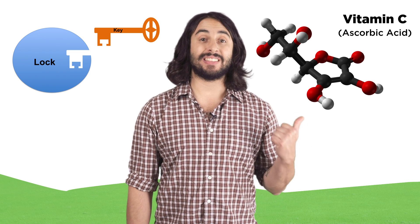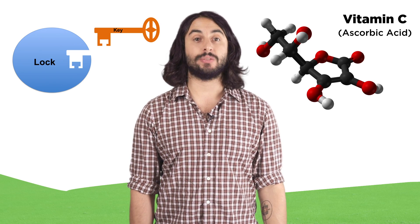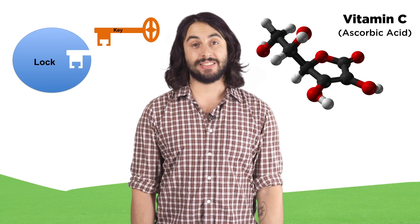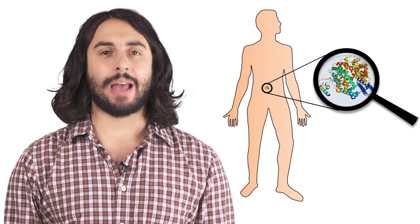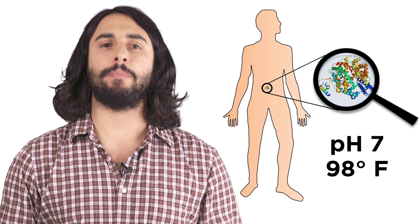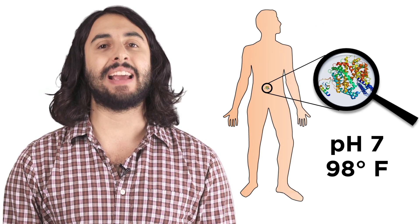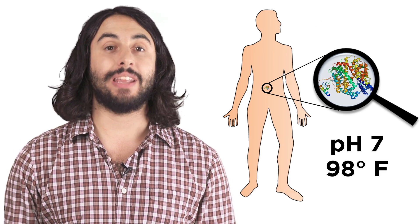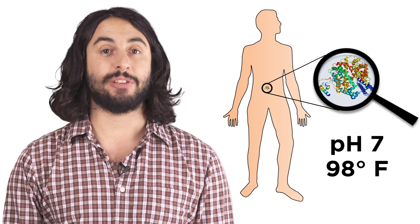That's why any molecule that's these specific atoms arranged in this way is vitamin C. Nature makes this just fine, always has, but when nature does chemistry it is limited to the normal pH and temperature inside a living organism, so it has to use big bulky molecules to do blind chemistry.